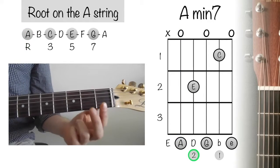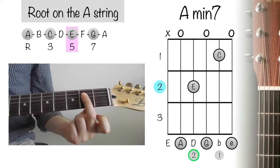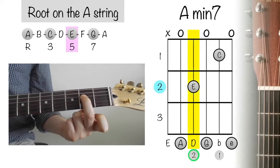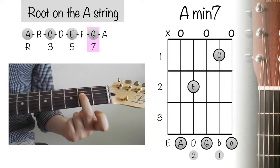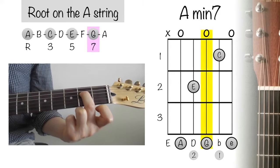Use finger 2 to play the note E on the 2nd fret of the D string. The 7th of the chord is the note G. Play string 3 open by not pressing on any fret.